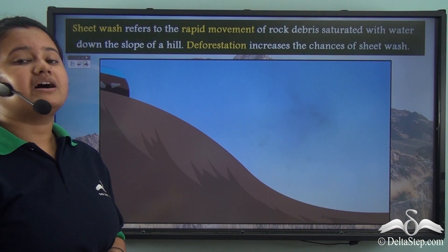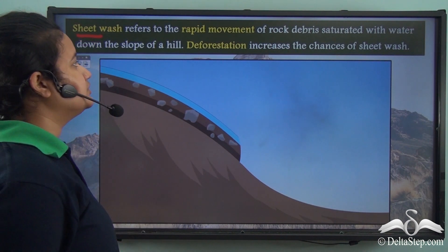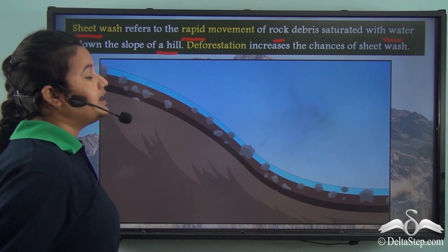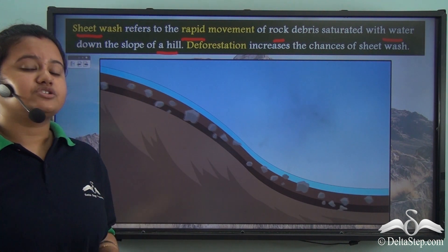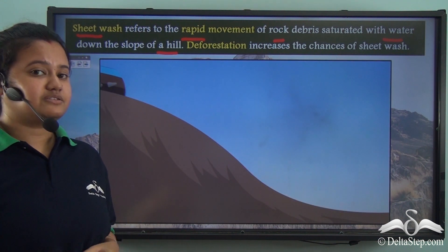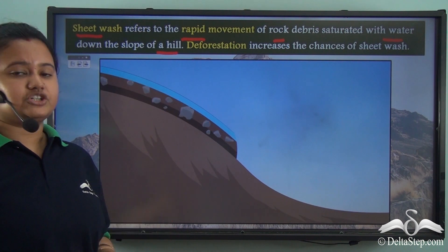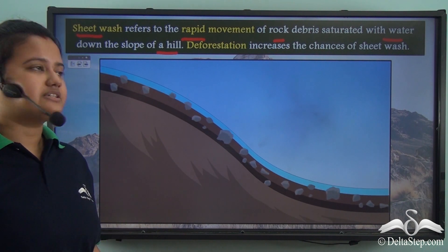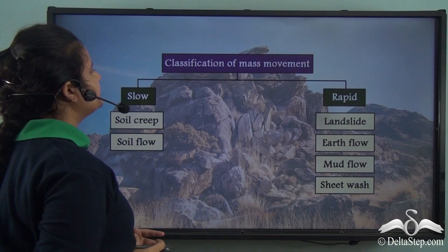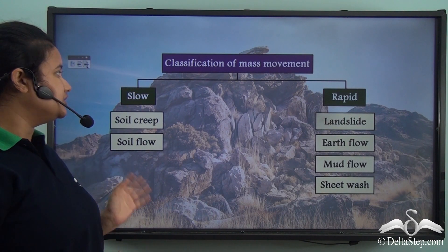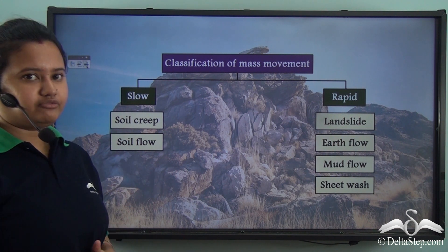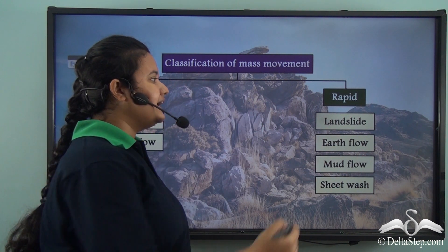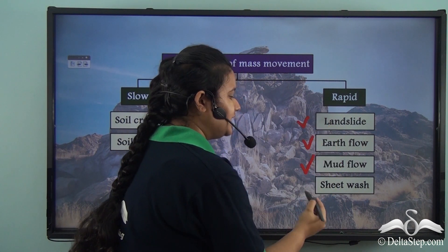Another rapid mass movement is sheet wash. Sheet wash refers to the rapid movement of rock debris saturated with water down the slope of a hill. Sheet wash is mainly caused when water denudes the top layer of the land surface in the form of long sheets. Deforestation or removal of vegetation exposes the top layer of soil and increases the chances of sheet wash. So the rapid mass movements are: landslide, earth flow, mud flow, and sheet wash.